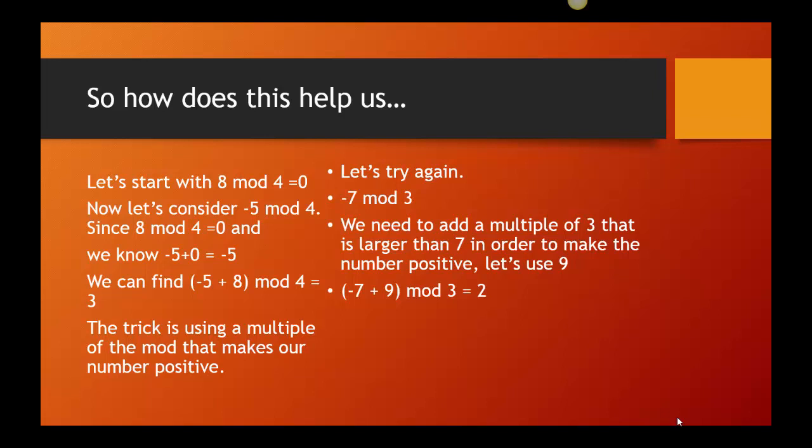So, when I think about negative 7, and I think about multiples of 3, I go, well, 9 is pretty close to 7, and it's bigger than 7. So, let's add that. So, here I have negative 7 and I'm adding 9. And, when I add that together, negative 7 plus 9, that's going to give me 2.